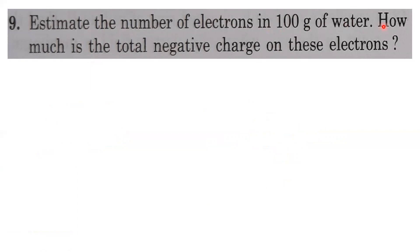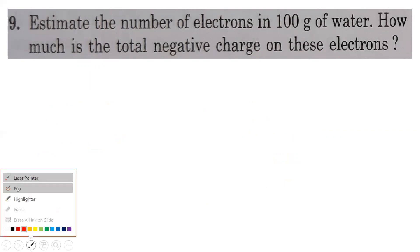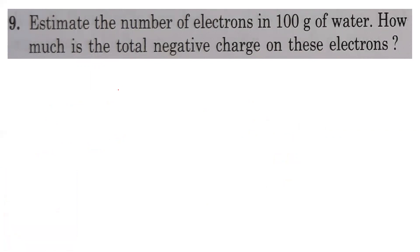Next problem: estimate the number of electrons in 100 grams of water and find the total negative charge. We know that 18 grams of water contains Avogadro's number of water molecules. So 1 gram contains Avogadro's number divided by 18 molecules, and 100 grams contains 100 × Avogadro's number / 18 molecules.